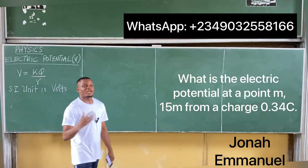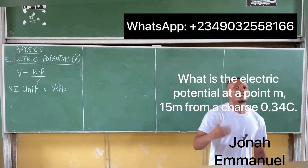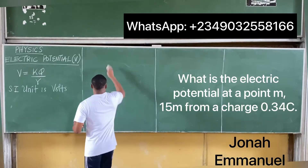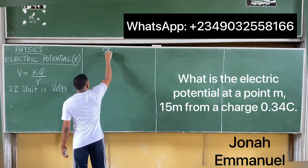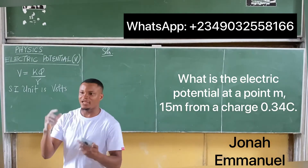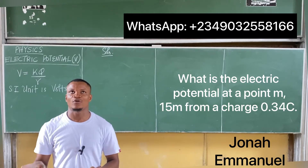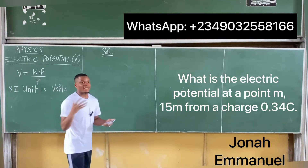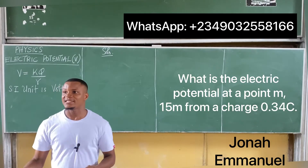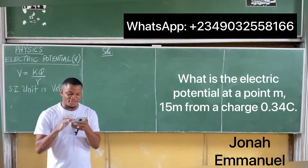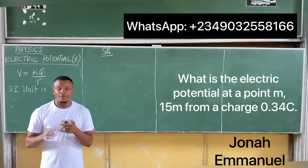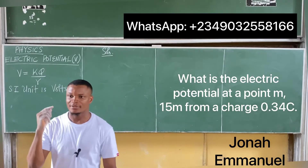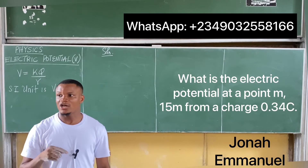Example: What is the electric potential at a point M, 15 meters from a charge of 0.34 coulombs?